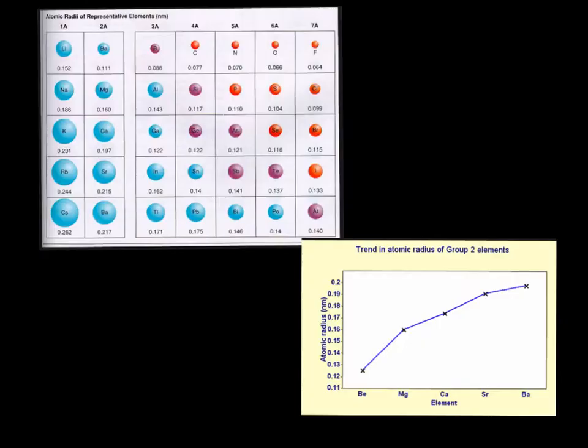Here's a picture of a bunch of atoms, and you can see as you go down a group that the atoms are getting larger. See, as you go down here, you can see lithium to sodium to potassium. In this group, they're getting larger. As you go down this second group, they're getting larger.